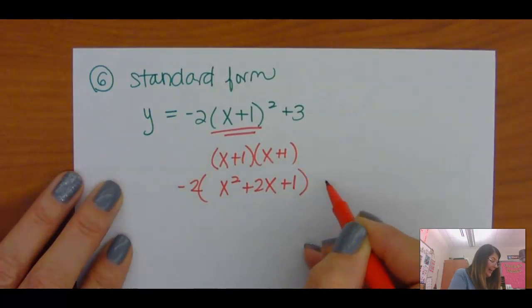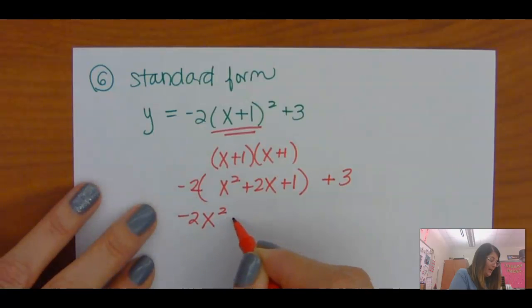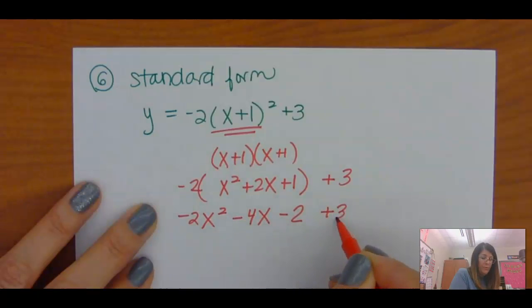Now I've got to take that negative 2 and distribute it to all of that. So I have negative 2x squared minus 4x minus 2 plus 3.